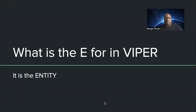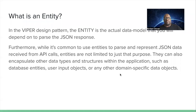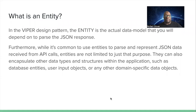We're going to discuss making a VIPER pattern design. We've already discussed V, UI, Interactor, Presenter. E is the entity and R is the router. The entity is the actual data model that you will depend on to parse the JSON response. While it's common to use entities to parse and represent JSON data received from API calls, entities are not limited to just that — they can also encapsulate database entities, user input objects, or any other domain-specific data objects.